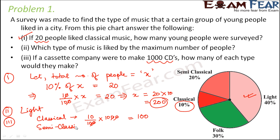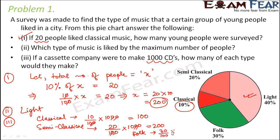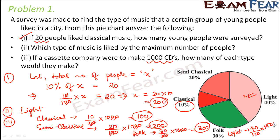Semi-classical would be 20% of 1000, that is 20/100 × 1000 = 200 CDs. Folk would be 30% of 1000, that is 30/100 × 1000 = 300 CDs for folk music. For light music it would be 40%, that is 40/100 × 1000 = 400 CDs. Adding all together: 400 + 300 + 200 + 100 = 1000. So the company would make 100 classical, 200 semi-classical, 300 folk, and 400 light music CDs.